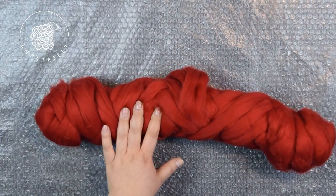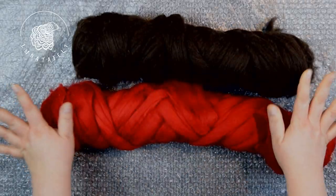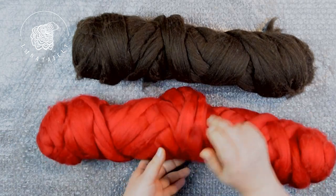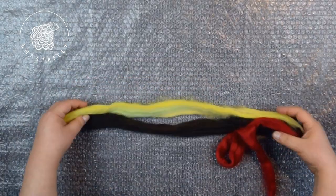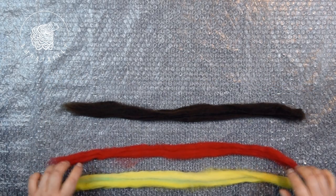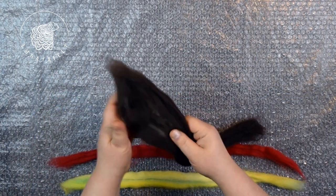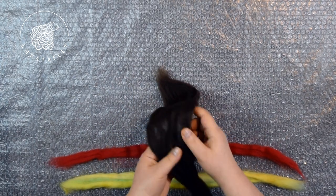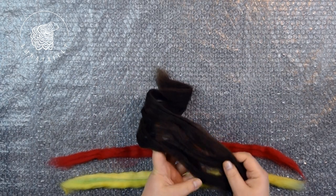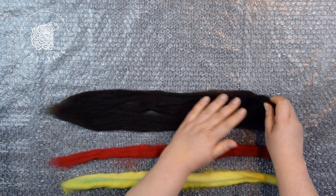To create multi-layered felt cords, we need wool in several colors. It's best if the colors are contrasting. In this case, I am using merino wool of 21-25 microns in comb top form, but you can use wool from any sheep breed and different fineness depending on your project. The felting method remains the same as for regular cords. The trick lies in the wool layout.